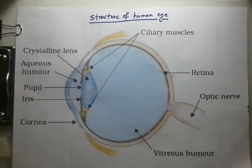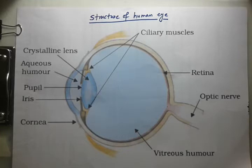In this video, we are going to describe the main parts of the human eye and explain the focusing action — how focus is taking place. The human eye is the most valuable and sensitive sense organ, and it is a remarkable optical instrument.